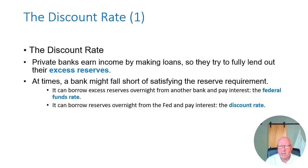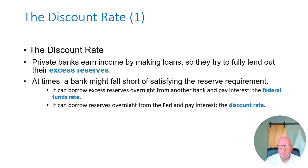Private banks earn income by making loans — that's the business banks are in — so they try to fully lend out their excess reserves. If the Federal Reserve requires that you keep 20% of your total deposits sitting in cash, you'd use the rest to make car loans, house loans, business loans, and credit card loans. Banks don't want to keep excess reserves because excess reserves are cash in the vault or a free deposit at the Fed that earns no money.